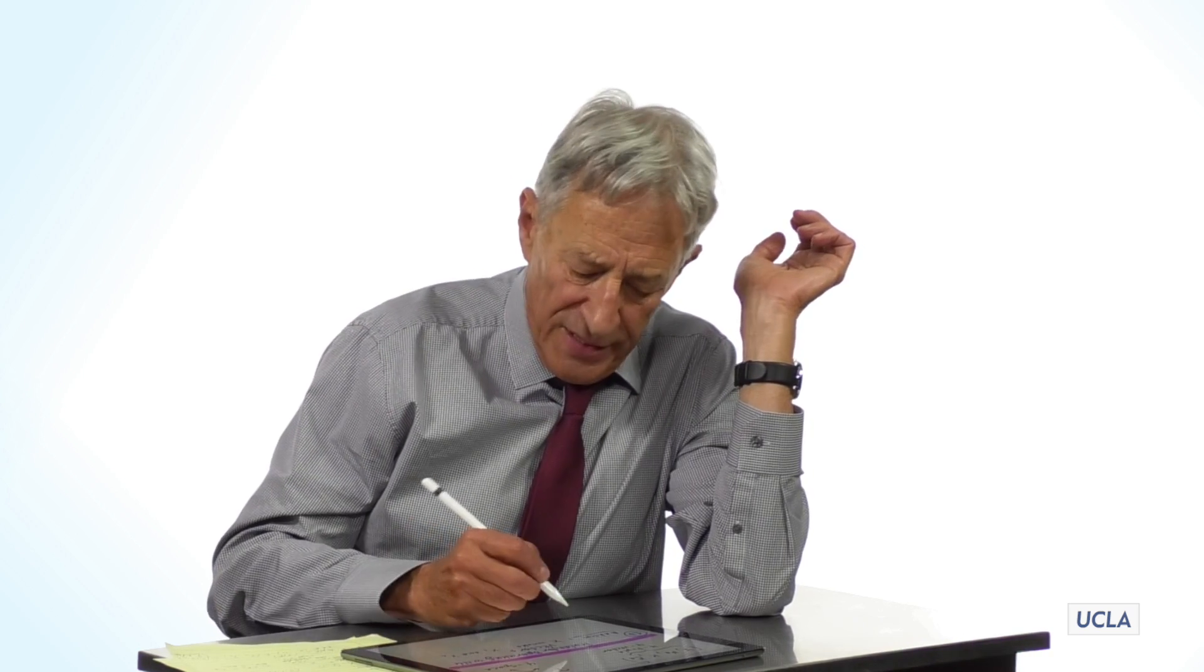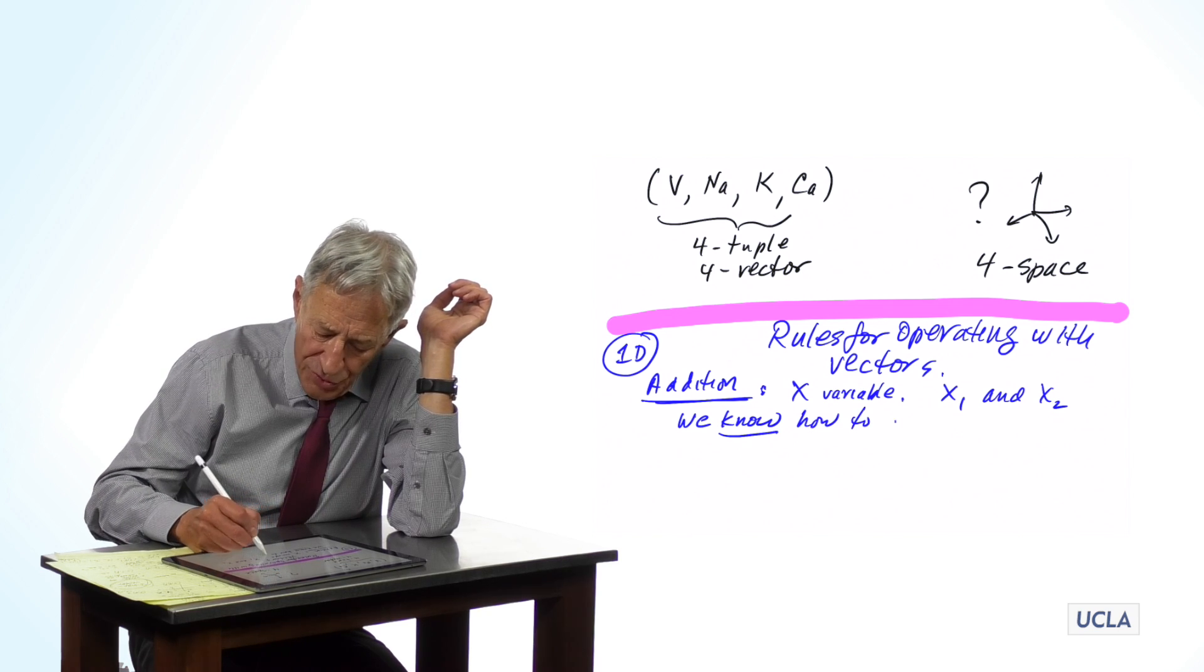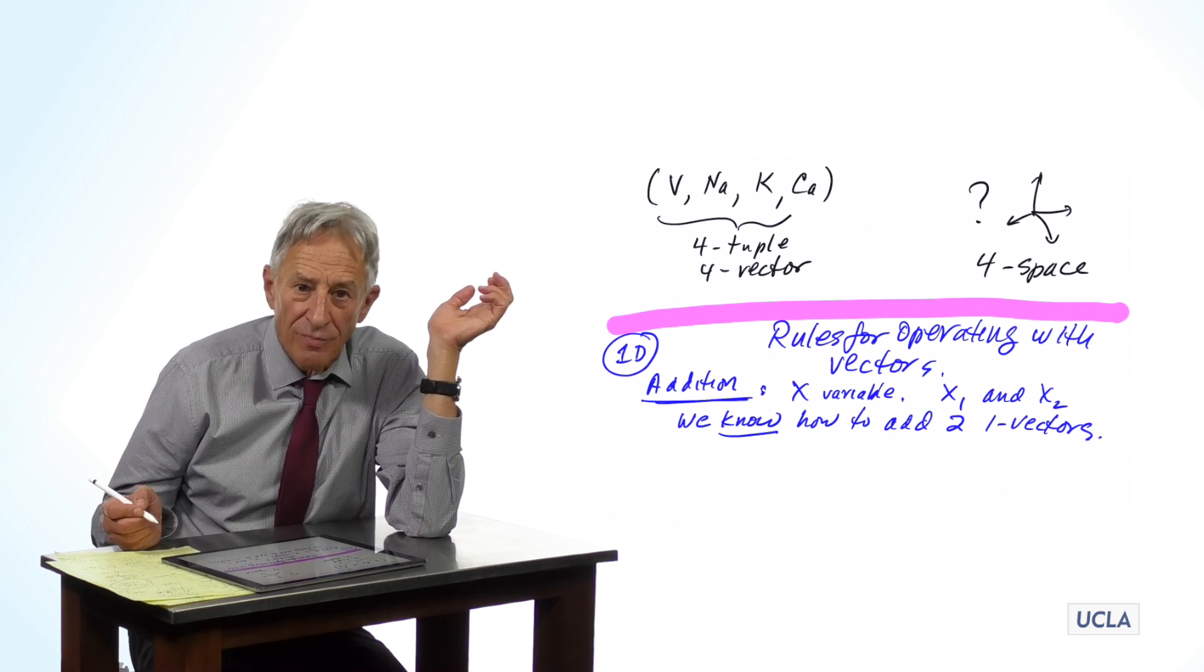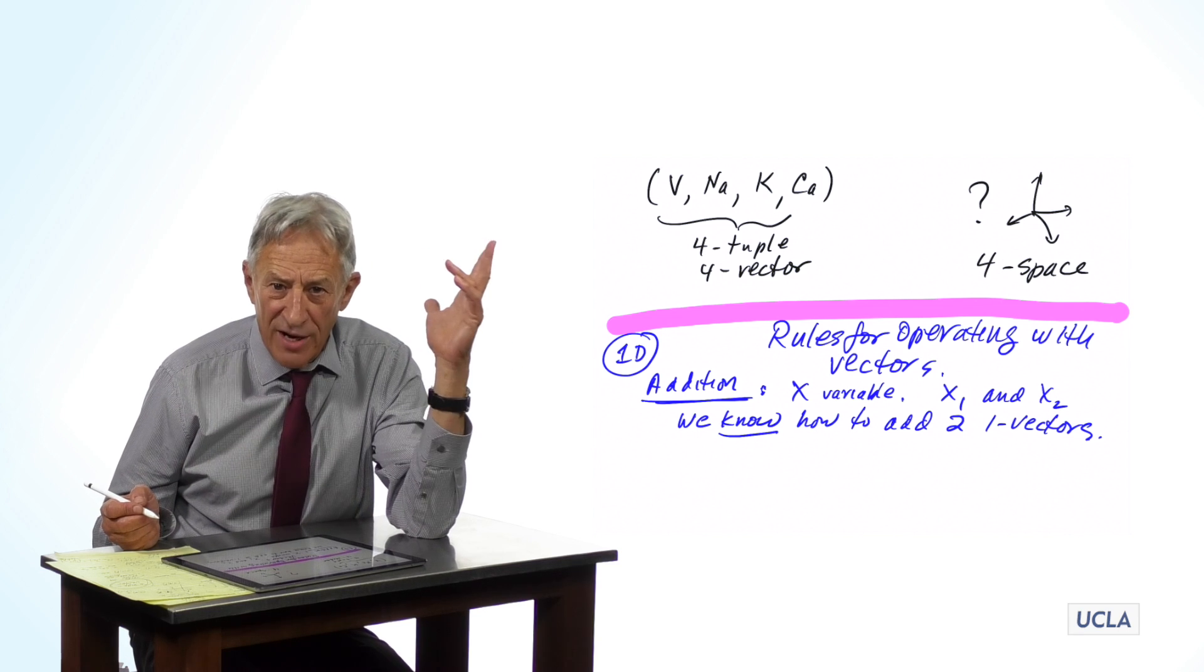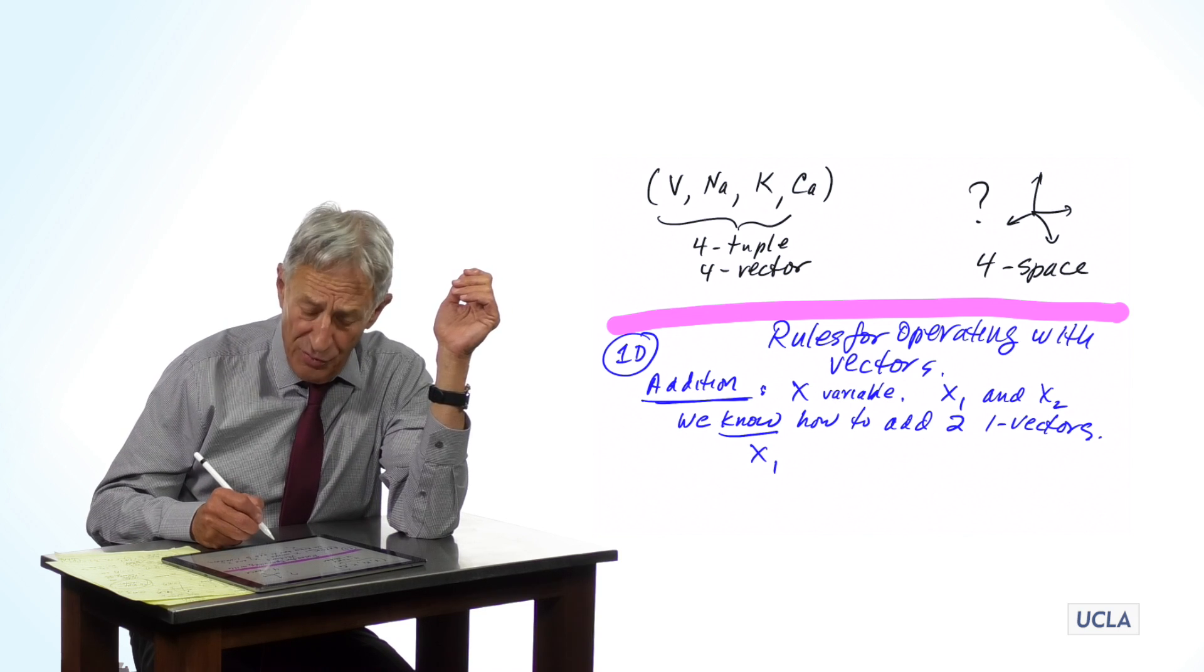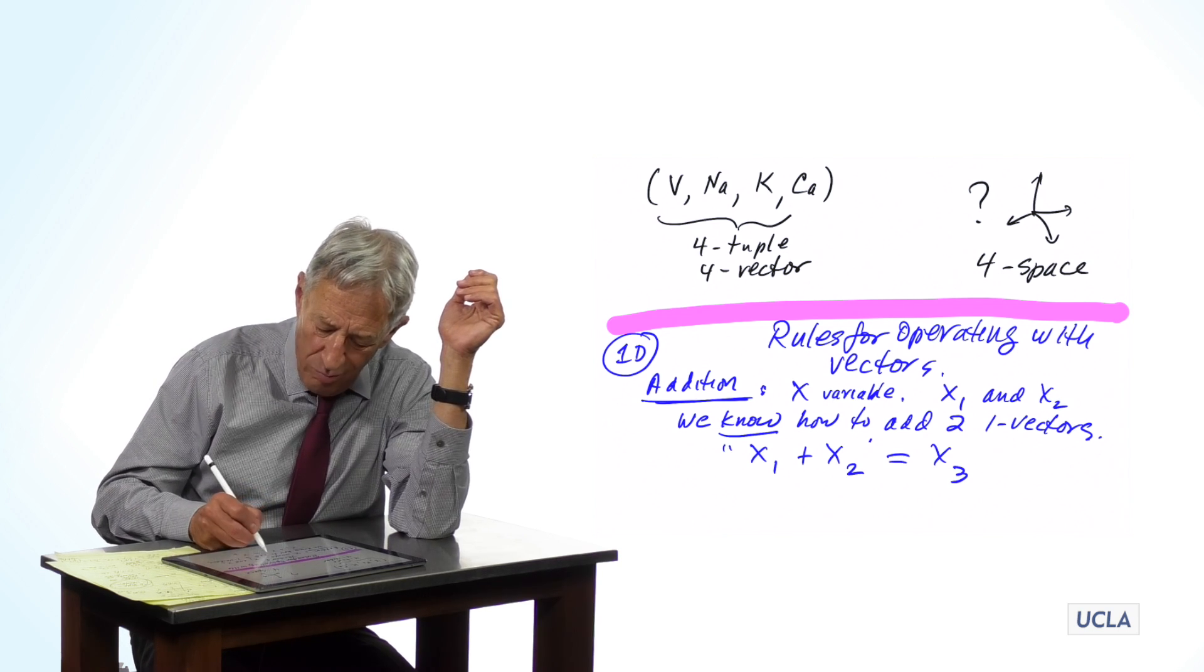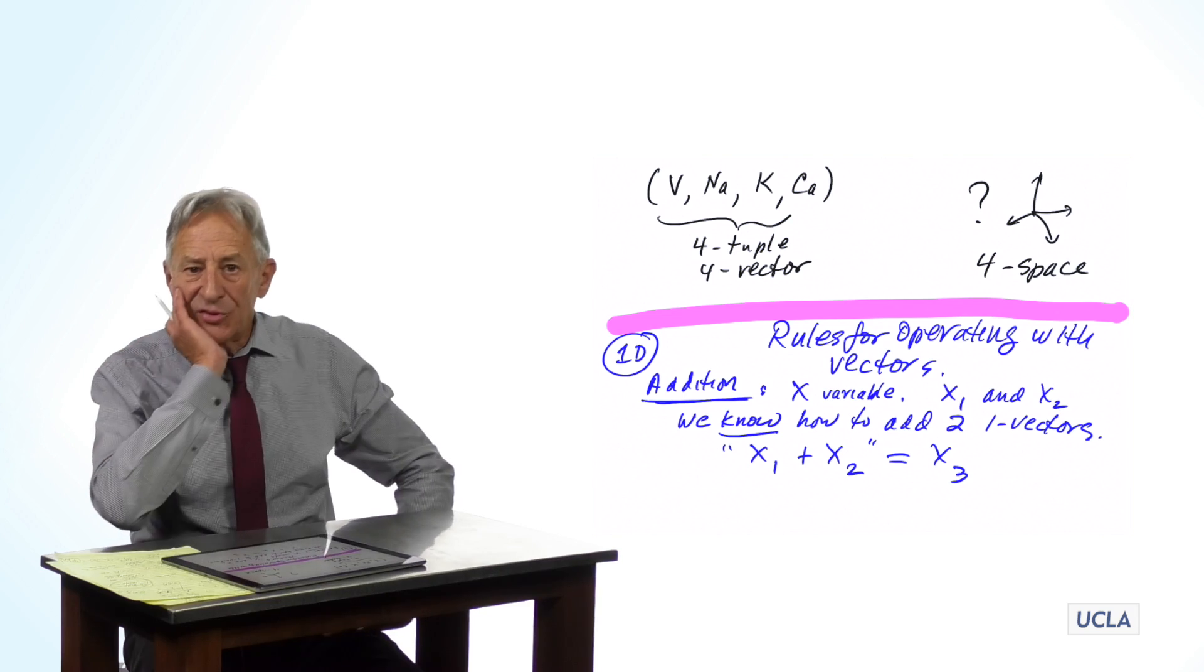So, the first rule is we know how to add two one-vectors, because a one-vector is a number, and we learned how to add two numbers in the second grade. So, if x1 is a vector and x2 is a vector, we can make a third vector called x1 plus x2. And we know how to add these two things, because they are two numbers. So, we know how to add two vectors to get a third vector in the same space.